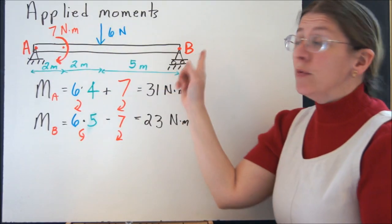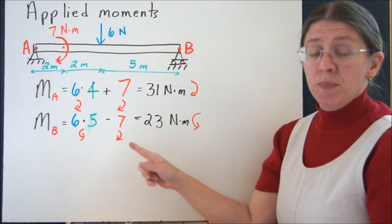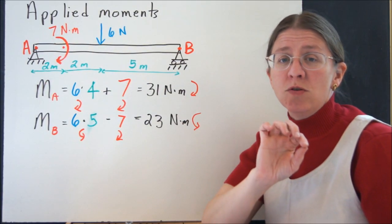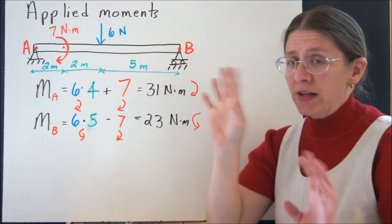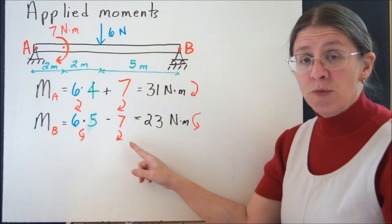The 7N load is still right where it is. So I could, just like I can move it to A, I can move it to B, and it's just a constant. Please don't multiply those by a distance, or divide by a distance, or anything weird. It's just a constant in your moments.